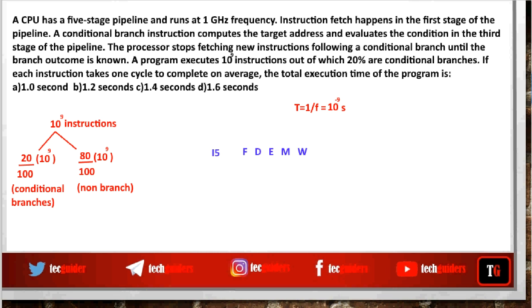We have a 5-stage pipeline, and the conditional branch instruction computes the target address and evaluates the condition in the 3rd stage. Suppose i5 is a conditional branch instruction — the branch target will be evaluated and computed only at the 3rd stage. The processor stops fetching new instructions following a conditional branch until the branch outcome is known. So the next instruction will not be fetched until the next clock cycle after the execution stage of the conditional branch, whether the branch is taken or not.